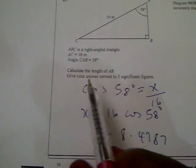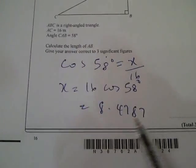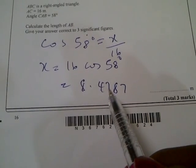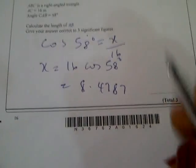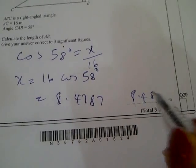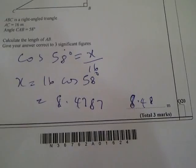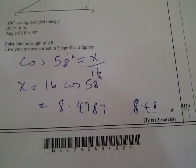Now they are saying that you should correct to three significant figures. So you go 1, 2, 3. So you have the answer to be 8.48. The answer is 8.48 meters. This is 8.48 meters to three significant figures.